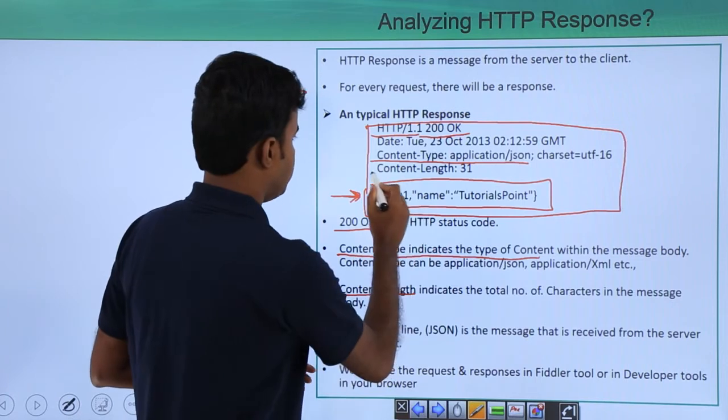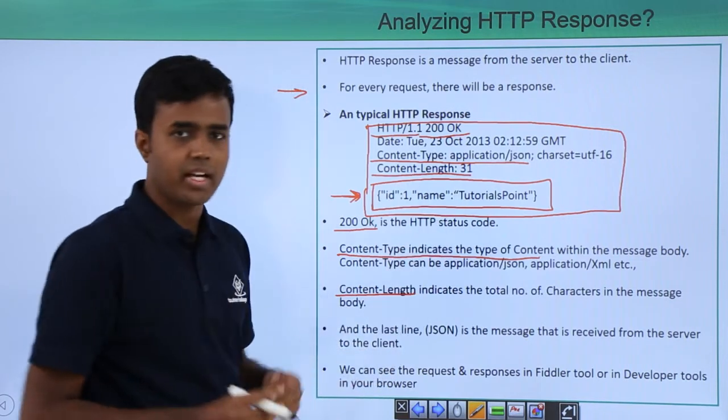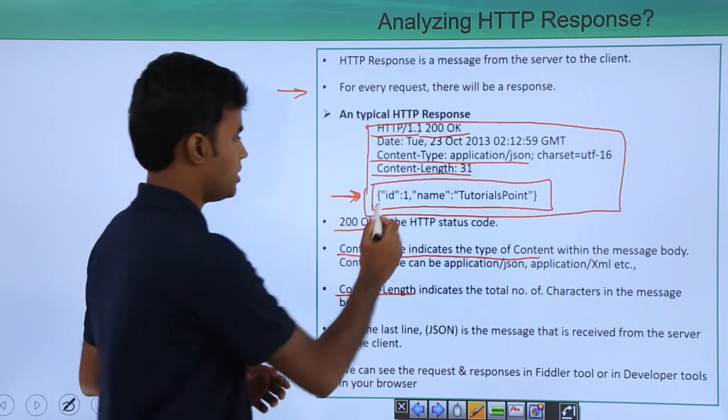The content length, the third one, basically indicates the number of characters within your message, which is 31 over here.